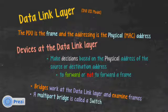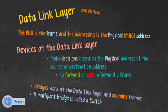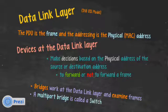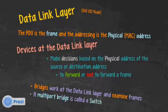Data link layer, still the OSI model. The PDU is the frame, and the addressing is the physical MAC address — physical and MAC are the same thing. Devices at the data link layer make decisions based on the physical address of the source or destination. The decision is simple: do we forward or not forward a frame? The first devices were called bridges — they had only two ports, in and out. They work at the data link layer, examine frames, and make decisions based on whether to forward or not forward frames.